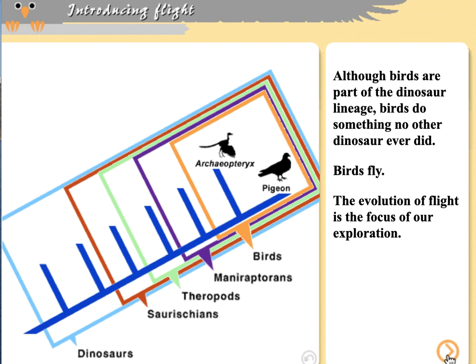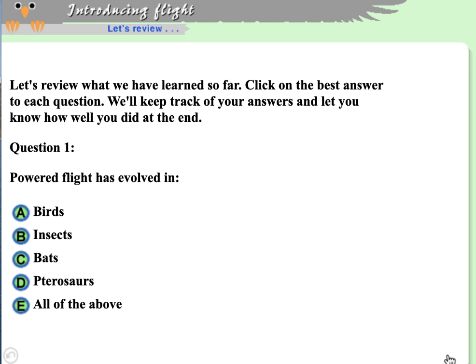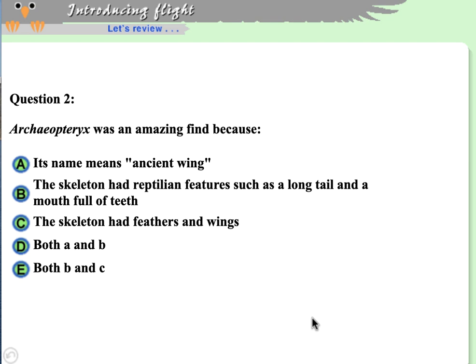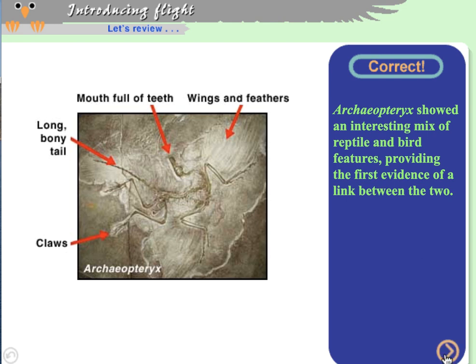Powered flight has evolved in several groups: birds, insects, bats, and pterosaurs — so all of the above. Archaeopteryx was an amazing find because it had a skeleton with reptilian features such as a long tail and a mouthful of teeth, but also had feathers and wings. It's the combination of reptilian features and bird features — feathers — that made it remarkable. It's a mix of traditional reptile characteristics and avian characteristics.